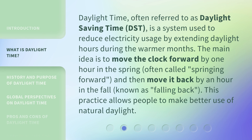Daylight Time, often referred to as Daylight Saving Time or DST, is a system used to reduce electricity usage by extending daylight hours during the warmer months. The main idea is to move the clock forward by one hour in the spring, often called springing forward, and then move it back by an hour in the fall, known as falling back. This practice allows people to make better use of natural daylight.